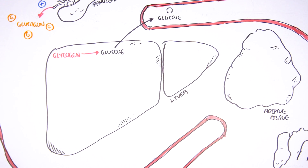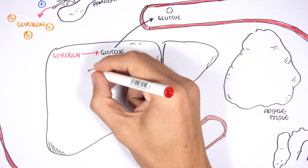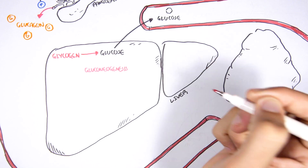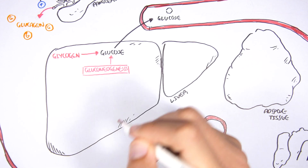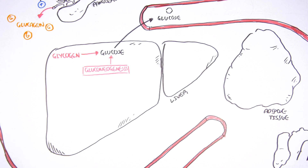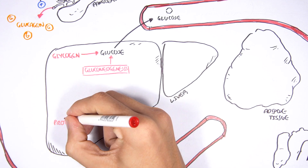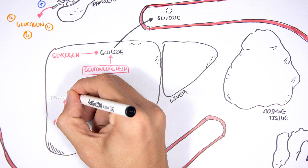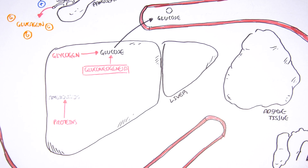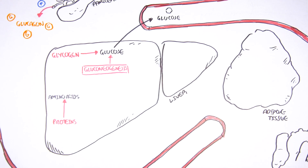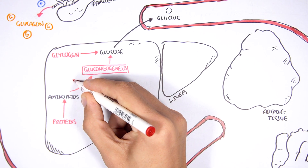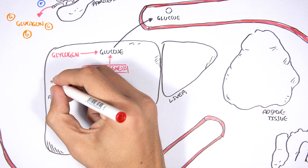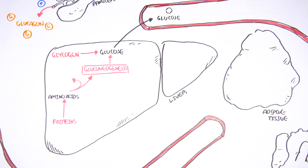Gluconeogenesis will also occur during the fasted state, where the liver's proteins are broken down to amino acids. These amino acids can then be converted to keto acids that enter gluconeogenesis to create more glucose. A byproduct of this reaction is ammonia, which will be converted to urea.